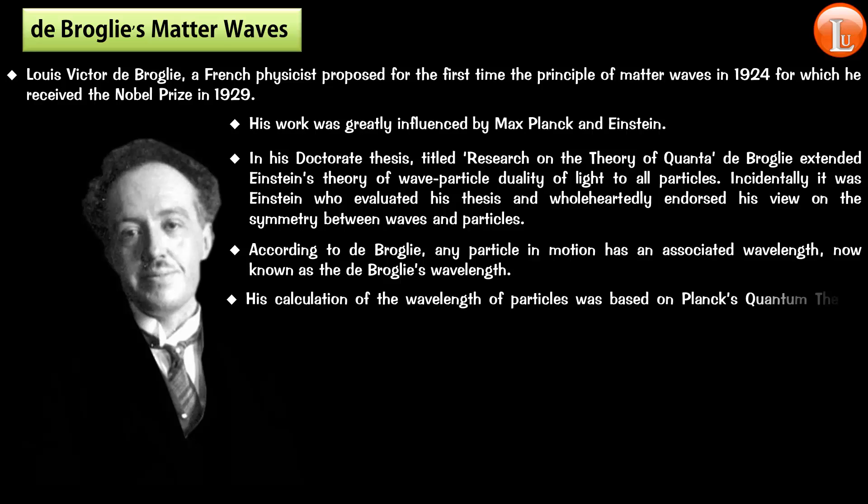What he did was, he started with the theory of relativity which said E equals mc squared. Now, do not think that this equation tells us the energy of a particle of mass M moving with velocity C. Because a particle having a defined mass cannot move with velocity of light, since velocity of light is the universal speed limit. Nothing can move even at the speed of light. Therefore, no particle of mass M can actually move the speed of light.